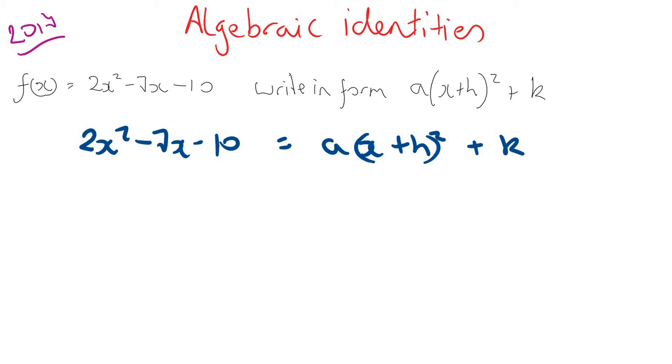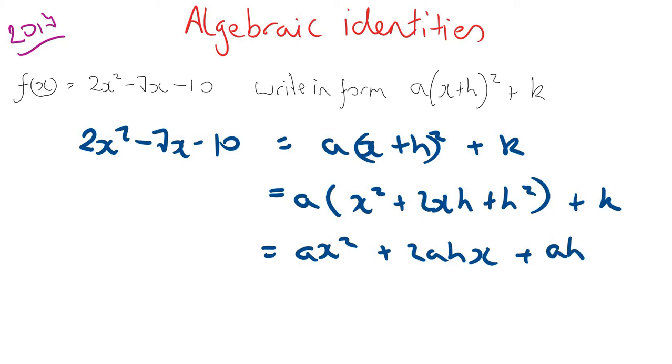Now for this to be true I need to expand out the right hand side. That's going to be a outside of x squared plus 2xh plus h squared plus k, which is equal to ax squared plus 2ahx plus ah squared plus k, and that's equal to 2x squared minus 7x minus 10.